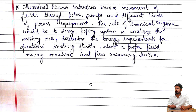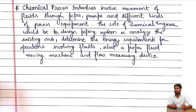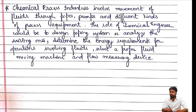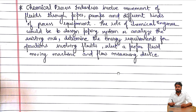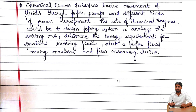Here we will see what role fluid mechanics plays in the chemical industry. Chemical process industries involve movement of fluids through pipes, pumps, and different kinds of process equipment. The role of a chemical engineer would be to design piping systems or analyze existing ones, determine energy requirements for fluid operations, and select proper fluid moving machines and flow measuring devices.